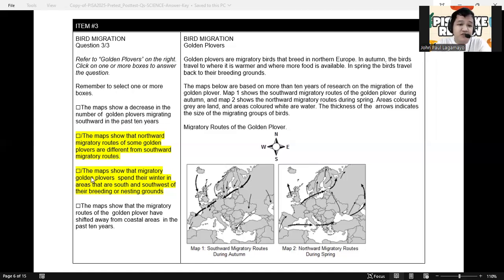Next option. The maps show that migratory golden plovers spend their winter in areas that are south and southwest of their breeding or nesting ground. Definitely, we can see here that this is still correct because they are just describing the southward migratory routes.